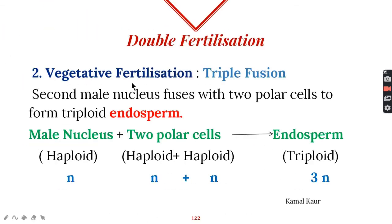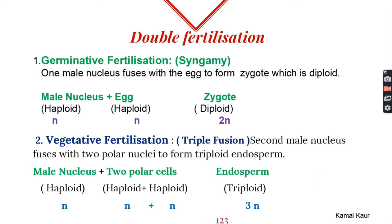Second fertilization is vegetative fertilization also called triple fusion. Here the second male nucleus fuses with two polar cells. As a result three sets of chromosomes fuse together to form a triploid endosperm. So this is the double fertilization in plants.